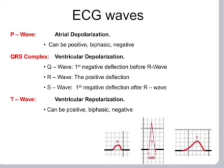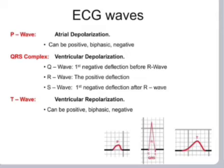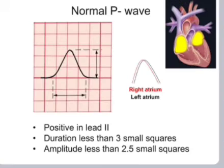Ventricular depolarization: the Q wave is the first negative deflection before R; the R wave is the positive deflection; the S wave is the first negative deflection after R. The T wave represents ventricular repolarization and can be positive or negative. A normal P wave is positive in Lead II, its duration is less than three small squares, and its amplitude is less than 2.5 small squares.